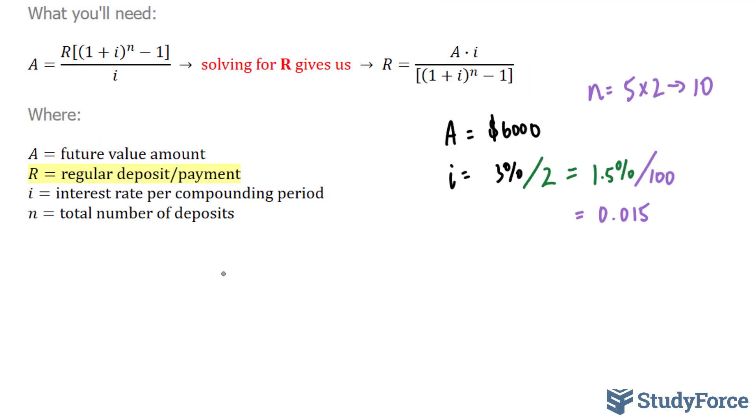So let's replace everything that we know. 6,000 is equal to our R value that we're looking for. 1 plus 0.015 to the power of 10 minus 1, close bracket, all over 0.015.